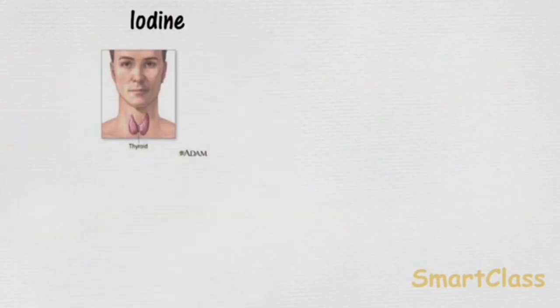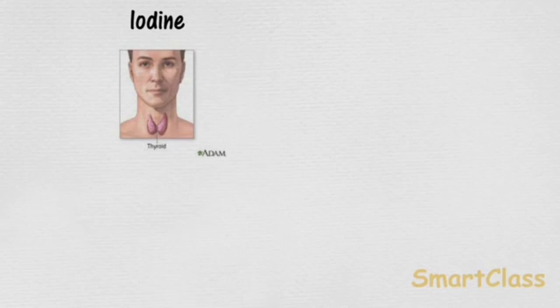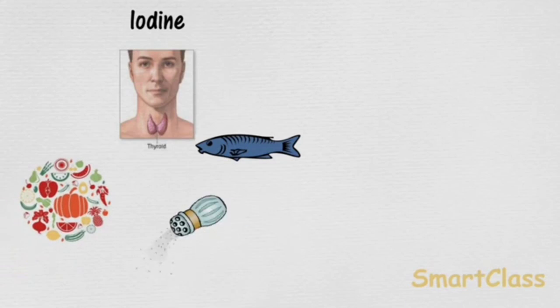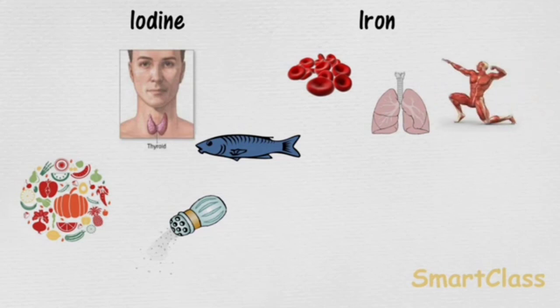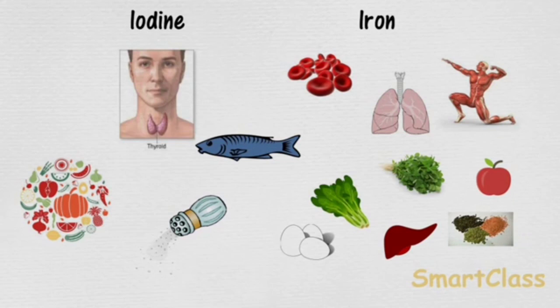Then iodine. Lack of iodine may lead to a disease known as goiter, so you have to include sea fish and iodized salt in your food.